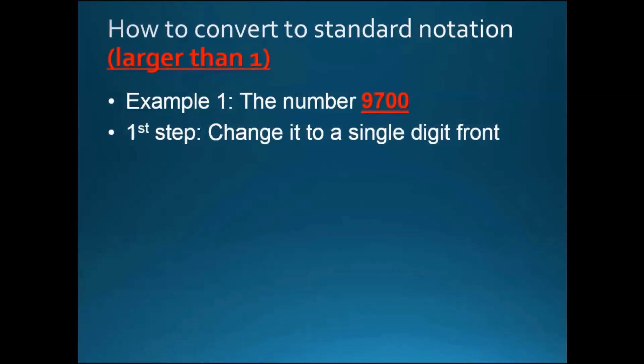The first step we need to do is to change it to a single digit front. So very simply we can convert it like this. So 9700 becomes 9.7 times 1000.